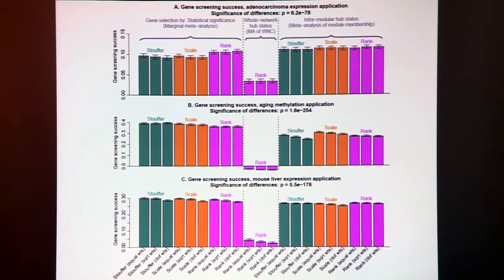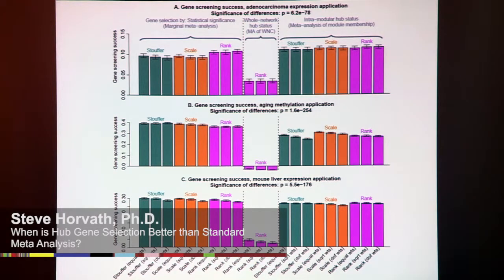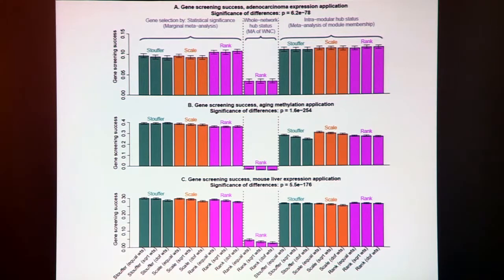It's not quite a probability, I think it's a mean correlation. Each method is allowed to select the same number of genes, let it be the top 50 genes.